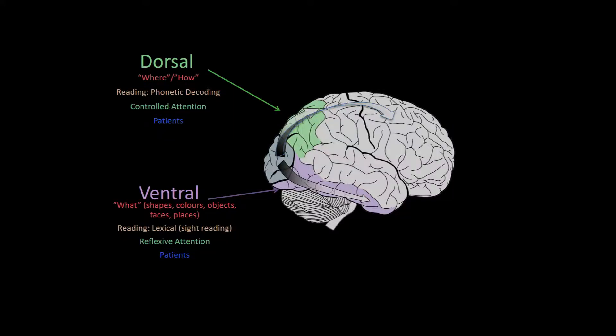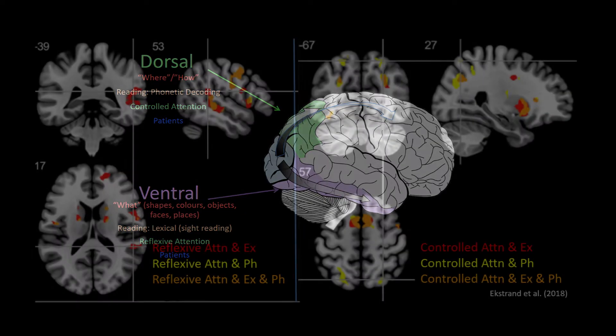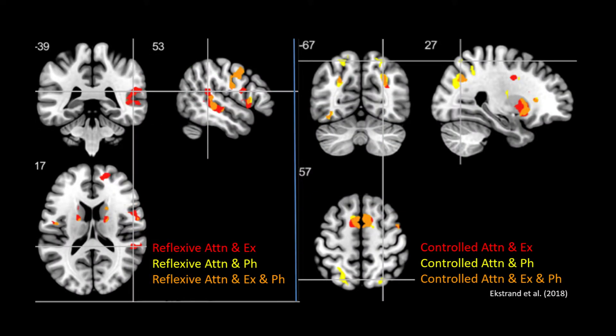Controlled attention involves more of the dorsal stream, whereas reflexive or automatic attention involves more of the ventral stream. We recently showed this distinction when examining the sharing of ventral stream regions of reflexive attention with lexical reading of exception words on the left side in red, and of dorsal stream regions of controlled attentional processing with pseudohomophone phonetic decoding on the right side in yellow.